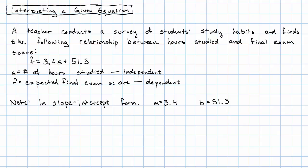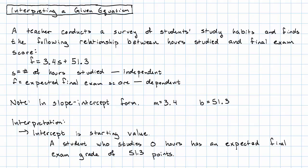How do we interpret this? We interpret the intercept as a starting value. So in this context that means a student who studies zero hours - that's the starting value when the independent variable is zero.